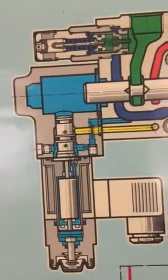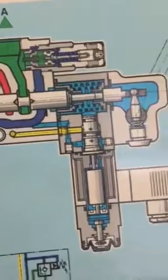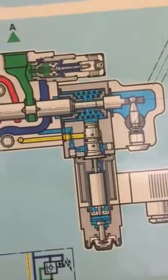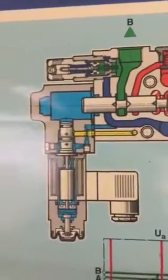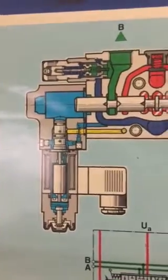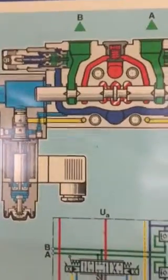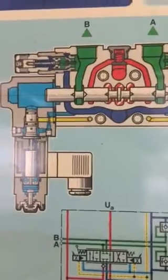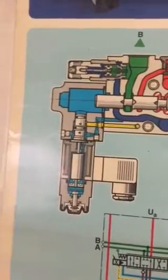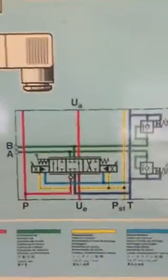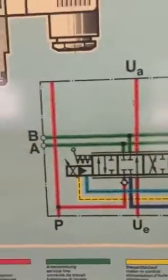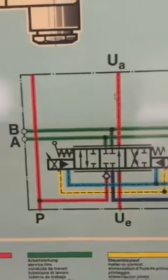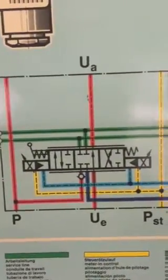This image shows the internal parts of the Proportional Sandwich Mobile Control Block. It looks very complicated, very sophisticated, but it is very high efficiency. The operator experience is very smoothly supported by electronic signals, and minimum energy is wasted in the operation of Proportional Sandwich Mobile Control Valves.